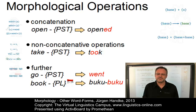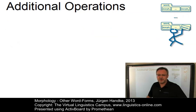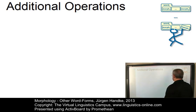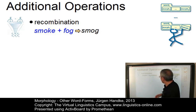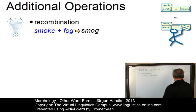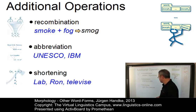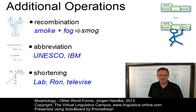Buku-buku is the result. Yet there are further operations that combine existing material or even subtract material from existing words. Here are some word forms to which operations have been applied that have not been mentioned yet: the recombination of parts of words, where 'smoke' and 'fog' can be recombined to 'smog'; abbreviations such as UNESCO and IBM; and shortening, where 'laboratory' can be shortened to 'lab', 'Ronald' to 'Ron', or 'televise' can be formed from 'television'. Let us look at these operations in detail.